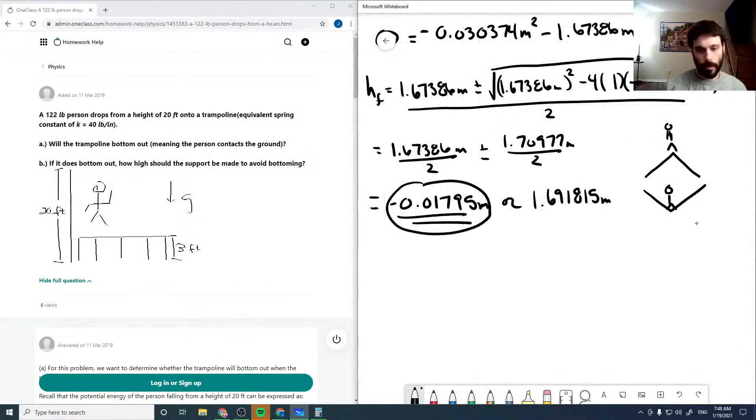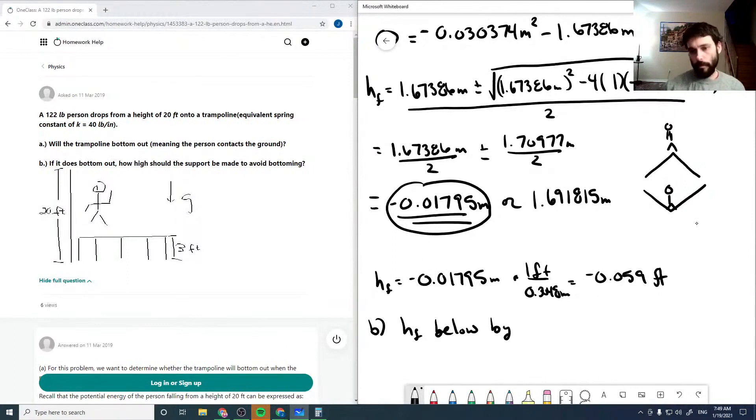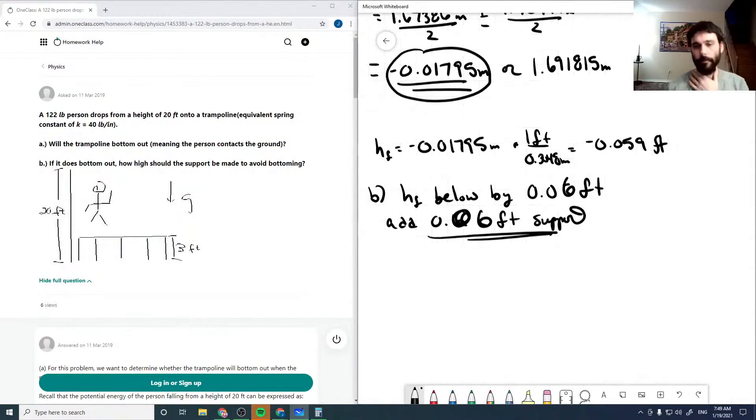And so it's going to bottom out by this amount, or putting this into feet, negative 0.059 feet. So for b, since hf is below the ground by 0.06 feet roughly, then we need to add 0.06 foot support. So the support needs to be greater than 0.06 feet.